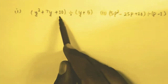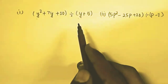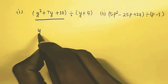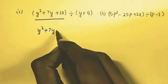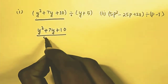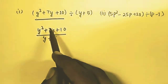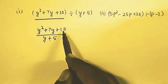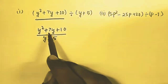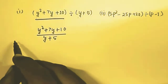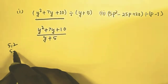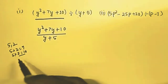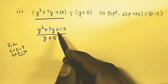The next question is y² + 7y + 10 divided by (y + 5). We need to factorize the numerator first. It is in the form x² + (a+b)x + ab. We need to find two numbers whose sum is 7 and whose product is 10 — those numbers are 5 and 2. So the factors are (y + 5) and (y + 2).